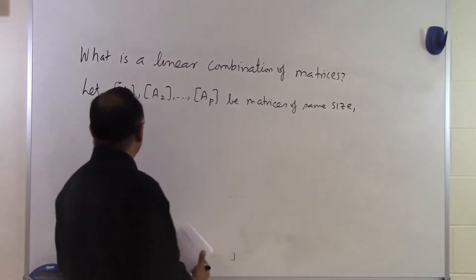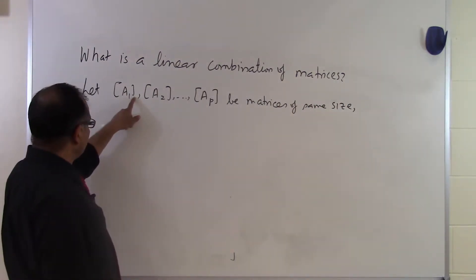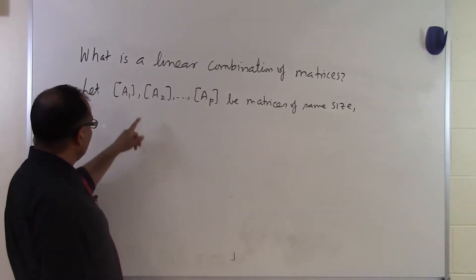So what we mean by that is that the number of rows in A1, A2, all the way to AP are the same. The number of columns in A1, A2, all the way to AP are the same.